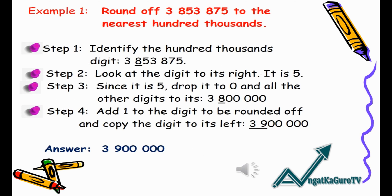Example: Round off 3,853,875 to the nearest hundred thousands. Step 1: Identify the hundred thousands digit — in this example, it's 8.